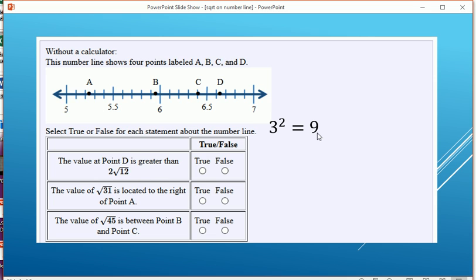First up, square root of 12 is bigger than 3 squared and smaller than 4 squared. It's almost right smack dab in the middle, so it'd be about 3.5. 2 times 3.5 is about 7. Is point D greater than that? If it were, it would be over here, and it's not, so that first one is false.